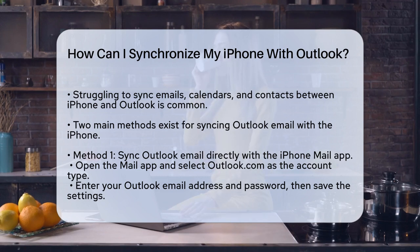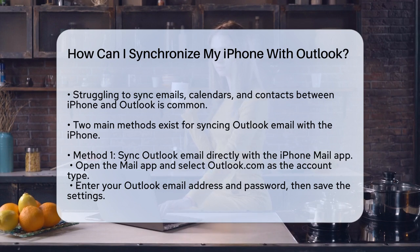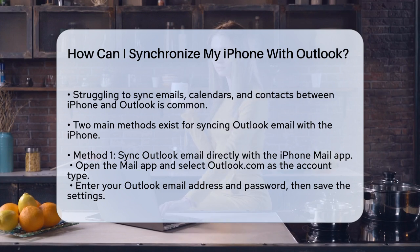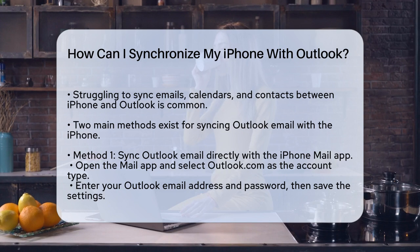You have two main methods to sync your Outlook email with your iPhone. The first way is to sync your Outlook email directly with the iPhone Mail app. To do this, you need to add your Outlook email account to the Mail app. Start by opening the Mail app on your iPhone and choose Outlook.com as your email account type. You'll be prompted to enter your Outlook email address and password. After signing in, make sure to turn on the Save option on the pop-up screen.